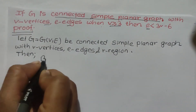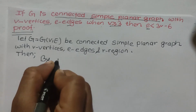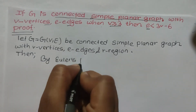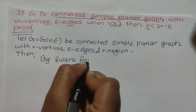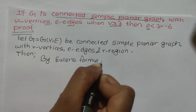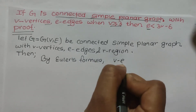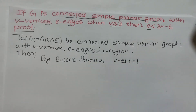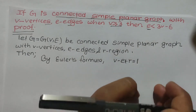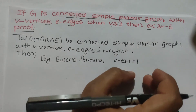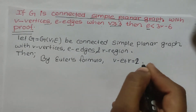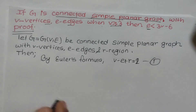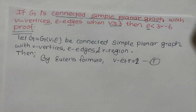By Euler's formula — V minus E plus R equals 2, as proven in the previous video — let us call this statement 1.